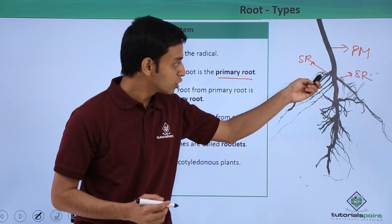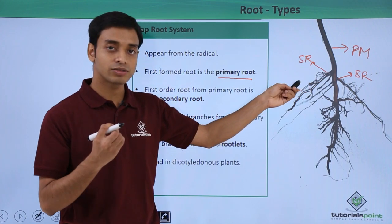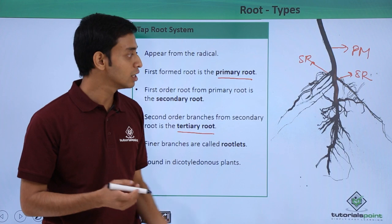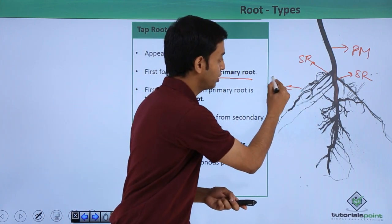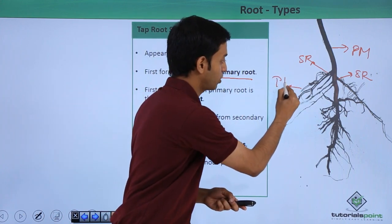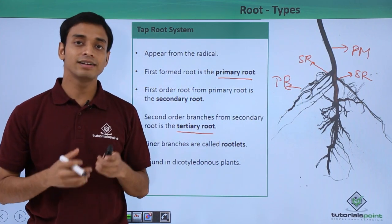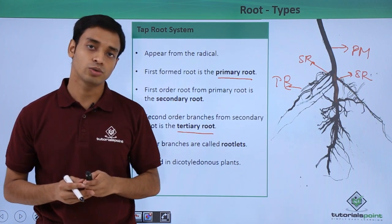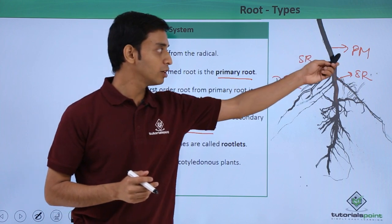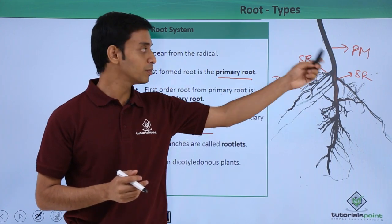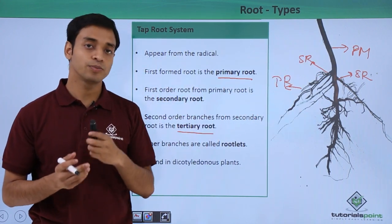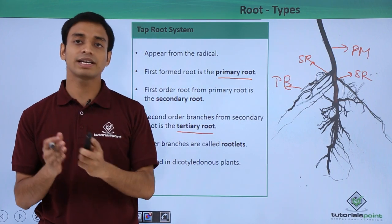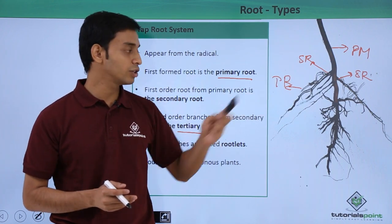From the secondary roots, we can see small, very thin root-like structures — these are the tertiary roots. So in summary, three types: the primary root is the main axis; branch structures from the primary root are the secondary roots; and branch structures from the secondary roots are the tertiary roots.